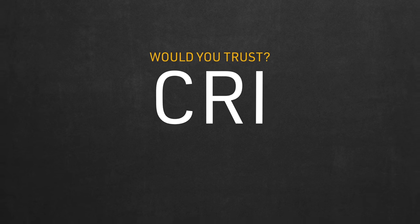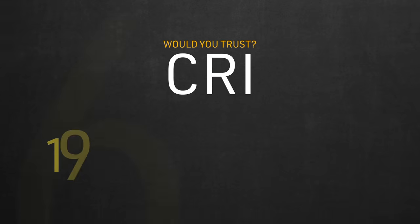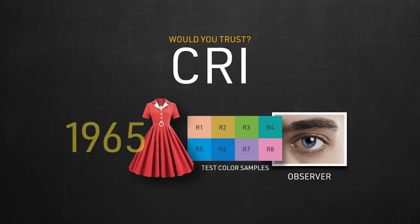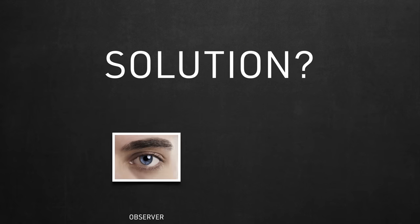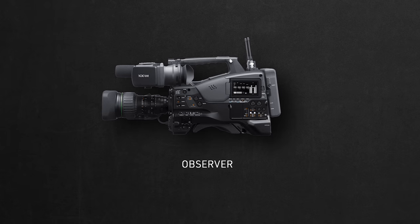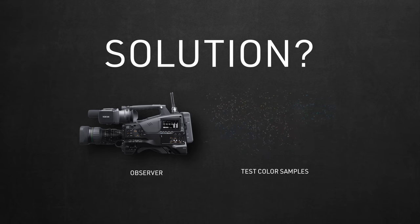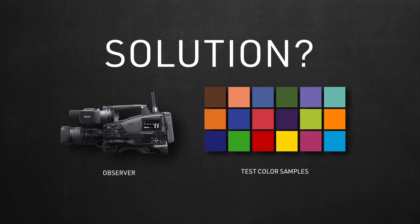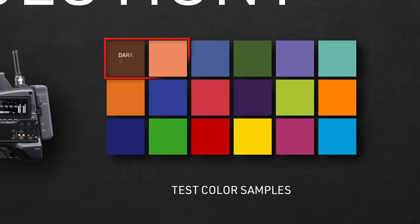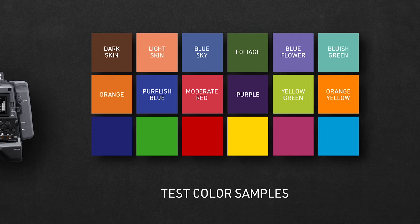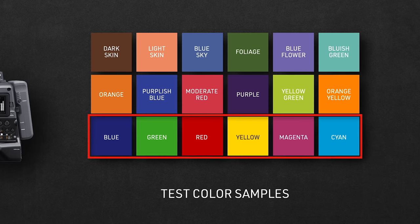Ask yourself: would you trust an outdated color metric developed 60 years ago for a whole other industry that shows you how a light reproduces only eight pastel colors to your eyes? So what's the solution? We probably need a digital camera as the observer, and a metric that uses more than just eight random pastel color samples. How about 18 colors perfectly relevant to filmmaking — covering dark and light skin tones, rich colors found in nature, and all the primary red, green, blue, cyan, magenta, and yellow colors?